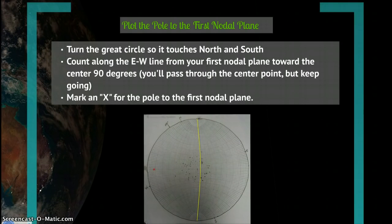Now you'll plot the pole to the first nodal plane. Turn the great circle so it touches north at the top and south at the bottom. Now count along the east-west line from your first nodal plane towards the center 90 degrees. You'll pass through the center point, but keep going. Once you've counted over 90 degrees, mark an X for the pole to the first nodal plane.